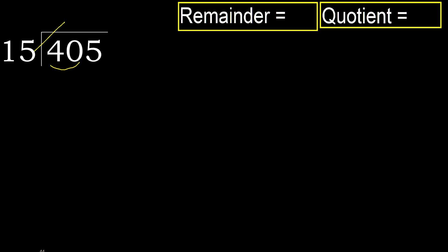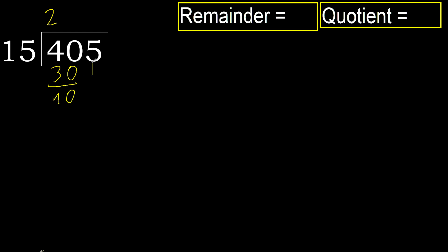15 multiplied by which number is nearest to 40 but not greater? 15 multiplied by 3 is 45, which is greater. Multiply by 2: 30 is not greater. 40 minus 30 is 10.